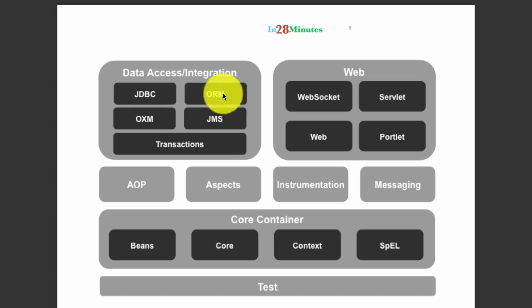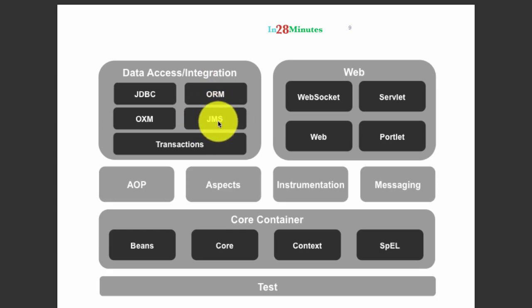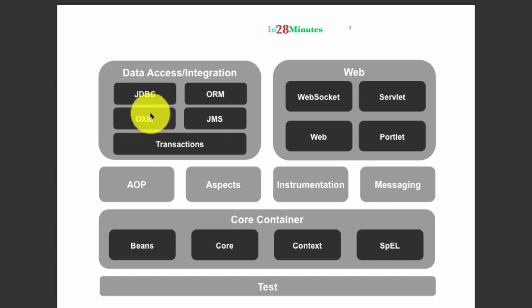Spring also has good integration with all ORM frameworks — object relational mapping frameworks. Some important ones are Hibernate and MyBatis. MyBatis is not really a true ORM framework, but it has some ORM features. Spring has good integration with them through the ORM module. Spring also has good integration with JMS — if you want to talk to another application over a queue, Spring JMS enables that. And wherever object-to-XML transformation is needed, Spring OXM provides a lot of useful features.